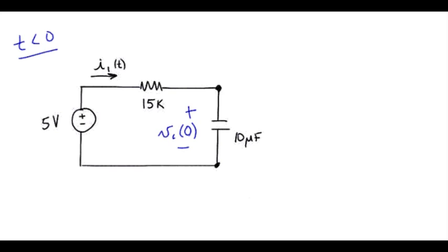The capacitor looks like an open circuit so let me replace that by an open. With this open we have no place for current to go through the 15k resistor, so I1 of T is also zero for T less than zero. That will be the other half of our solution for I1.